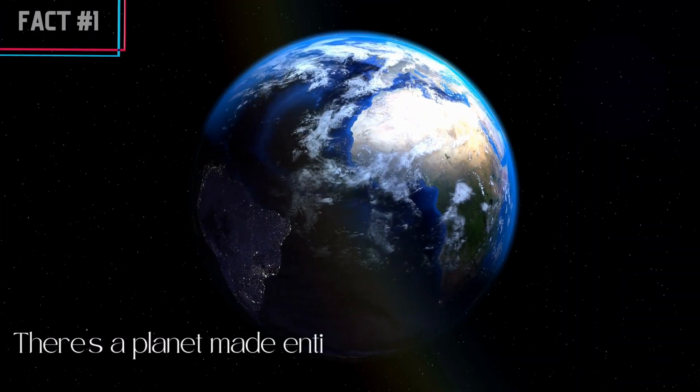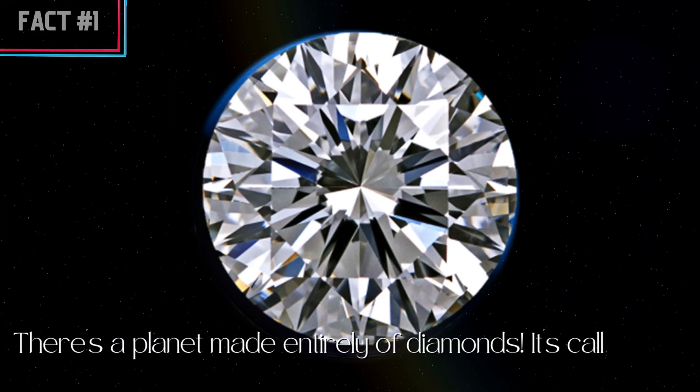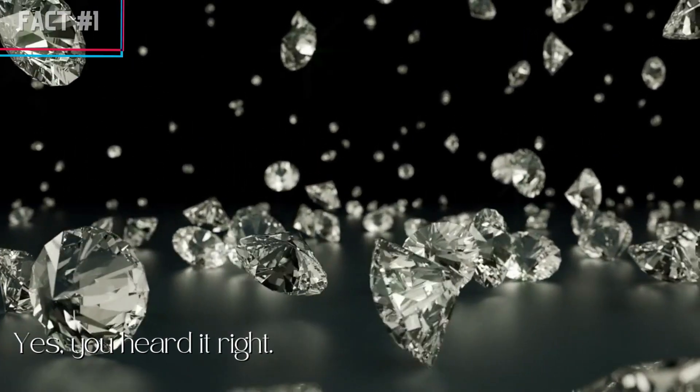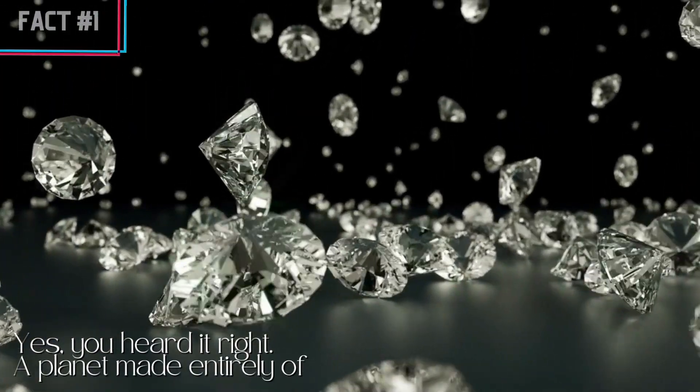Fact number 1, there's a planet made entirely of diamonds. It's called 55 Cancri E, and it's 40 light-years away from Earth. Yes, you heard it right. A planet made entirely of diamonds.